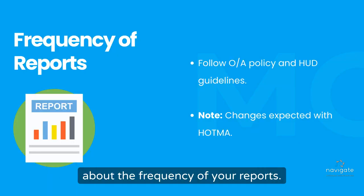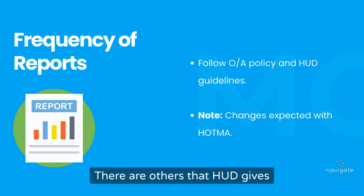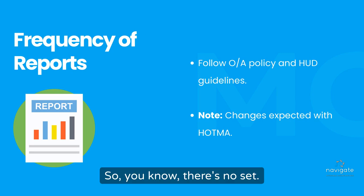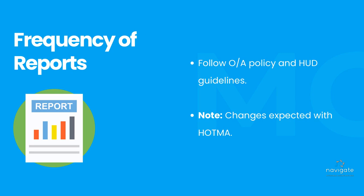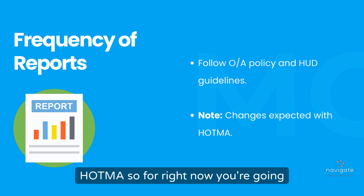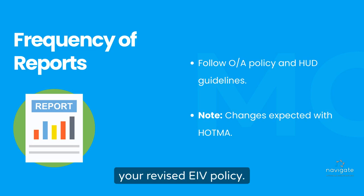Let's talk about the frequency of your reports. There are some reports that HUD says you have to run until things check out, and others that HUD gives owner discretion on when to run them. You need to follow the HUD guidelines and your own internal owner-agent procedures. Please note that there are changes expected with HOTMA. For right now, you're going to follow your existing policies, and then when HOTMA kicks in, you're going to follow the policies in your revised EIV policy.